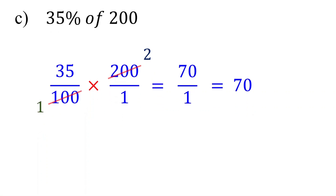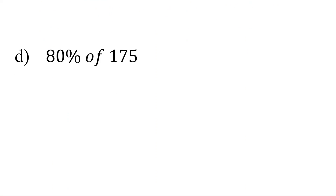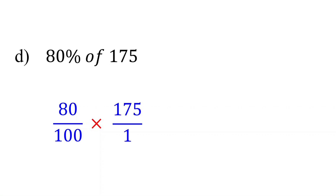Now it is your turn. Please pause the video and give it a try. 80% means 80 over 100. Of implies multiplication. 175 is the same as 175 over 1. Next, simplify the fractions. 175 and 100 have a common factor of 25. So 175 divided by 25 gives us 7, and 100 divided by 25 is 4. 80 divided by 4 gives us 20, and 4 divided by 4 is 1.